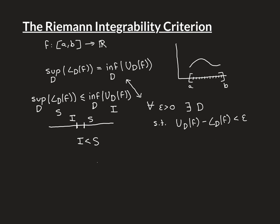Why is that a problem? Well, because this little interval has some length — S minus I — and we can just divide that length by 2. So we can go to the number halfway between the two, which is I plus S over 2. Now, because of the definitions of these things, I'll be able to find you an upper Riemann sum that is closer to I than that blue number, and a lower Riemann sum that is closer to S than that blue number.